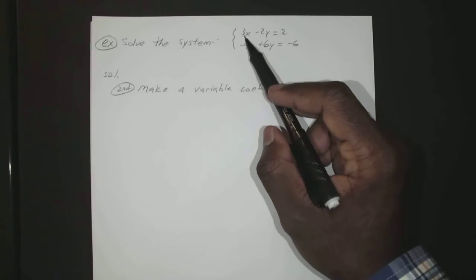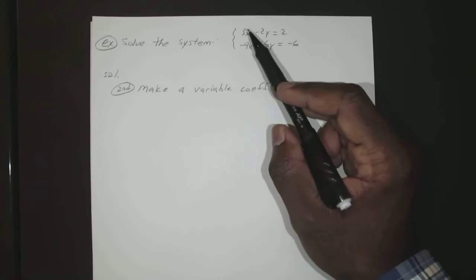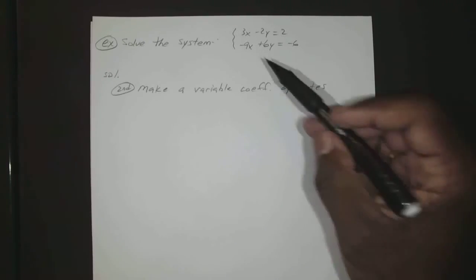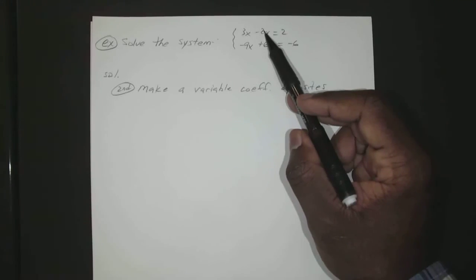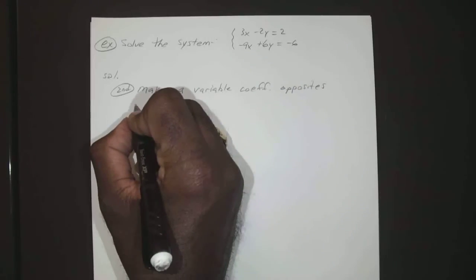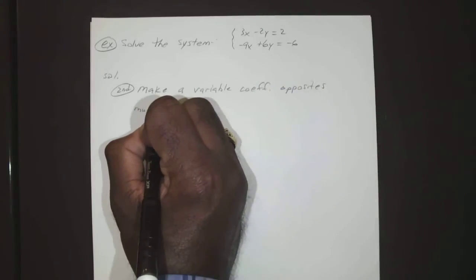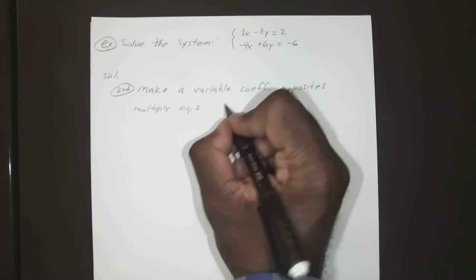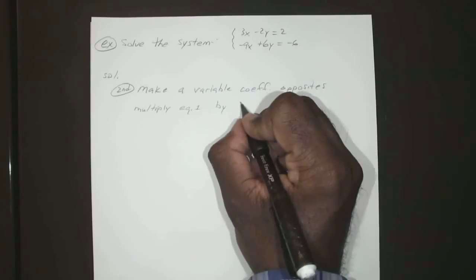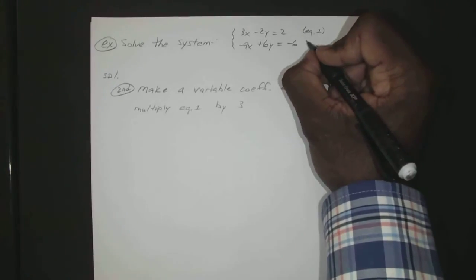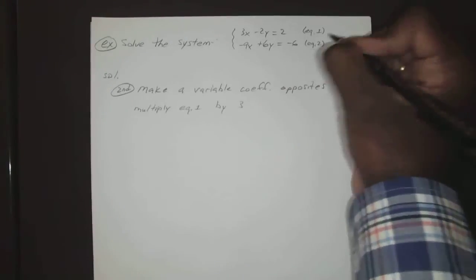So we multiply this first one by 3, all of them by 3, and the nines will cancel out. The y's will cancel out in this case also. Multiply equation one by 3.